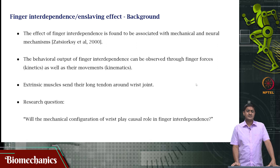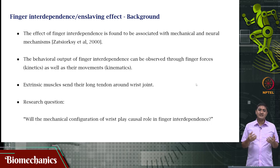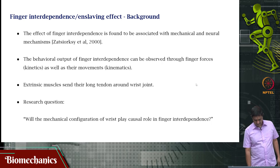We actually thought this would have a very big effect. When we started out, we were completely biased into thinking that wrist posture would of course affect finger interdependence. If the wrist is flexing, the extensor tendon is stretched; if extending, the flexor tendon is stretched. This will change the nature of force transmission through the tendon, and the amount of stretch may be different across fingers. So we thought there would definitely be a difference in finger interdependence based on wrist posture. This was the working hypothesis.